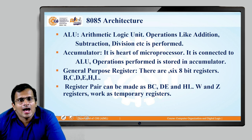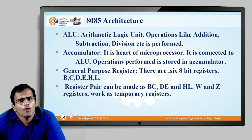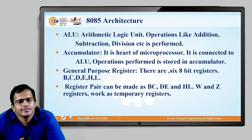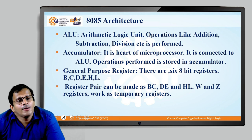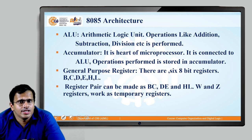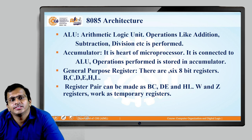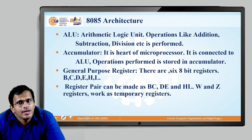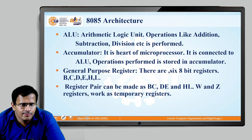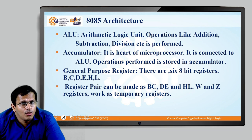First is the ALU, which performs arithmetic and logical operations such as addition, subtraction, multiplication, and division. The accumulator stores the results of these ALU operations — it accumulates all the values. The general-purpose registers B, C, D, E, H, and L are the six registers, and the other two registers are the accumulator and temporary register. To store 8-bit data, individual registers are used; for 16-bit data, register pairs BC, DE, or HL are used.